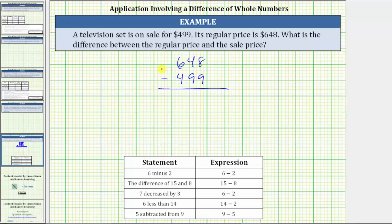We begin subtracting in the ones place value. We cannot subtract 9 from 8. We need to perform an exchange with the 4 in the tens place value. We change the 4 to a 3, and now we have 18 in the ones place value. 18 minus 9 is 9.